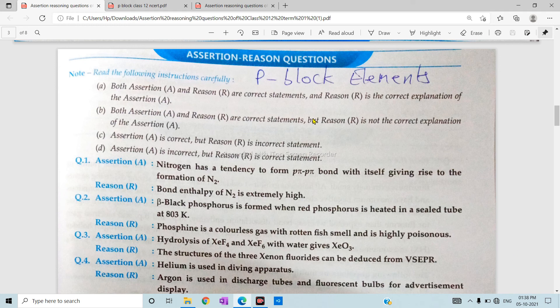Again, in front of you, if both Assertion and Reason are right and the reason is the correct explanation, then we will say A. If both Assertion and Reason are okay but it is not the correct explanation, then B. If the Assertion is correct, then C. And if the Assertion is incorrect, then D.